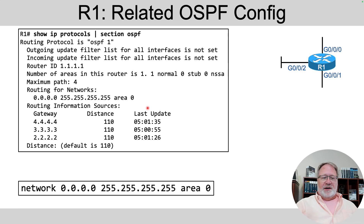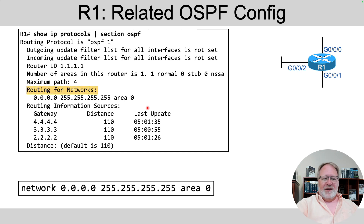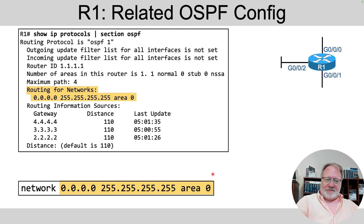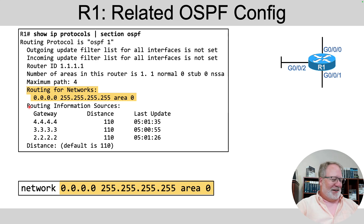If you're still curious about your configuration, show IP protocols — not show IP OSPF, but show IP protocols — gives information about all your routing protocols. If you care about OSPF, look at that section. In particular, it has a section labeled 'Routing for Networks,' and when you're using OSPF with the network command, everything after the network command appears in that section. It's a way to check what your configuration looks like even if you don't have access to show running-configuration.